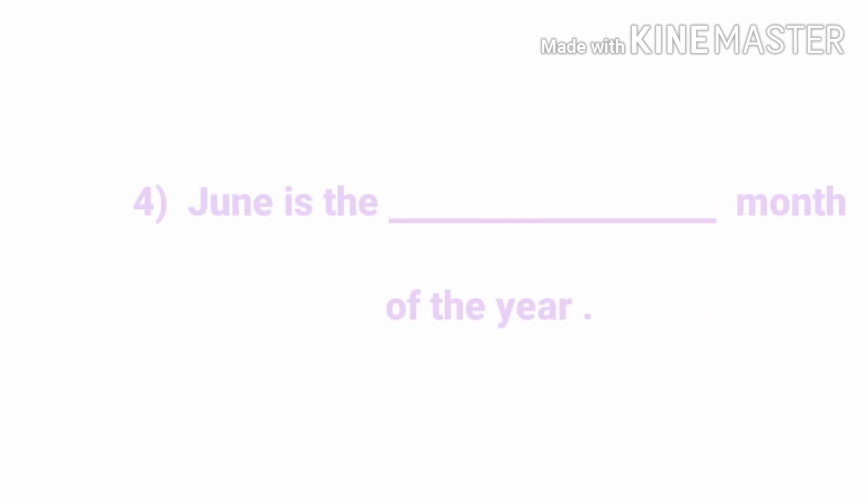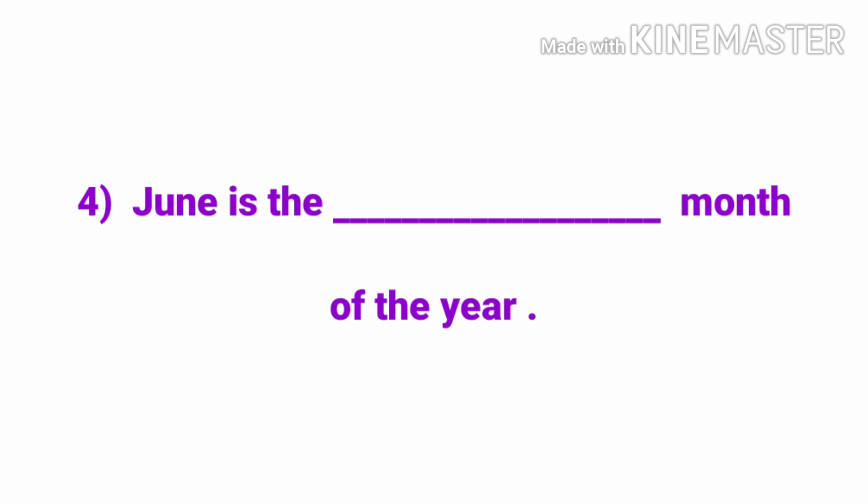Number four: June is the dash month of the year. Count it and write it. Think about when June comes.